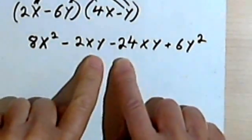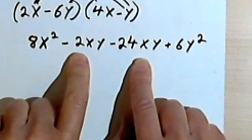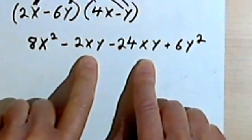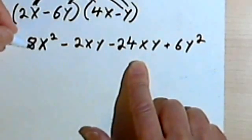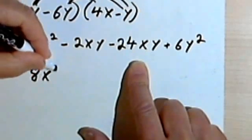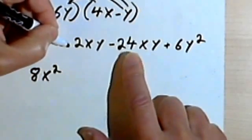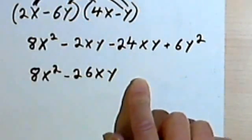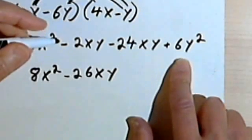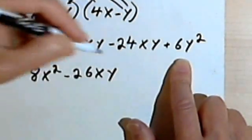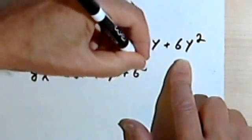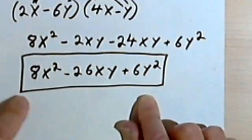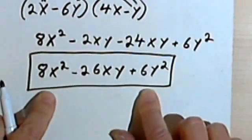Once again I look and see two like terms: negative 2xy and negative 24xy, so I can combine them. Starting from the beginning, I have 8x squared. Negative 2 and negative 24 give negative 26xy. And then I've got positive 6y squared. And that's going to be it — that's all there is to it.